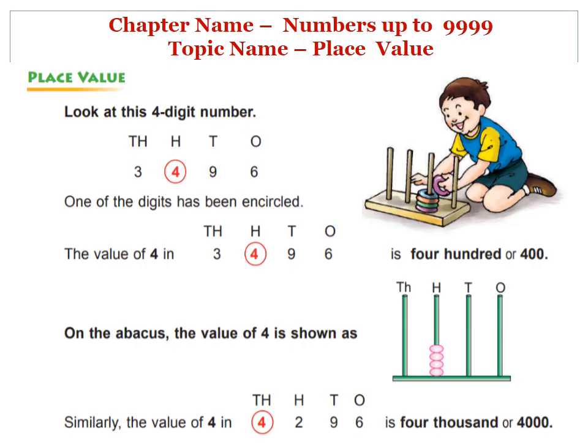Look at this 4-digit number. The number is 3496. Here, one of the digits has been encircled, and we have to write the value or place value of the encircled digit only. So, the value of 4, the encircled digit, is 400. On the abacus, the value of 4 is shown as 400.